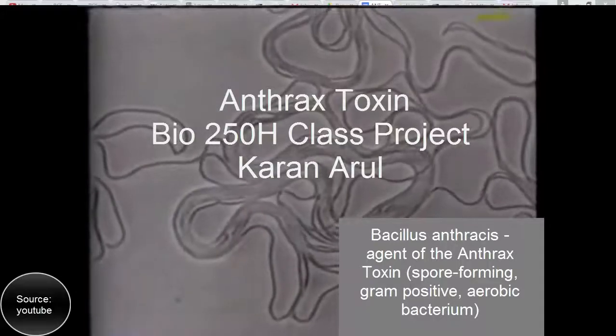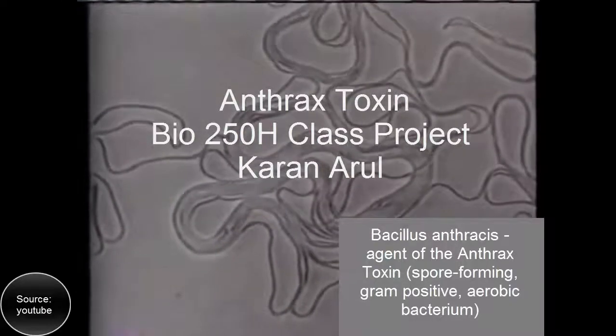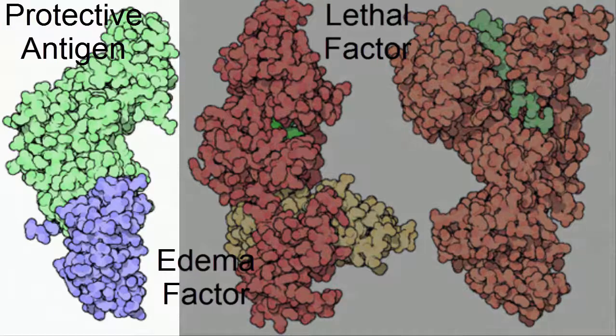How does its structure give rise to its unique biological properties? The anthrax toxin is composed of three separate molecules or moieties that have distinct functions. These three molecules are the protective antigen, edema factor, and lethal factor. The three molecules operate under a synergistic effect that disrupts cellular function, eventually leading to cell death.